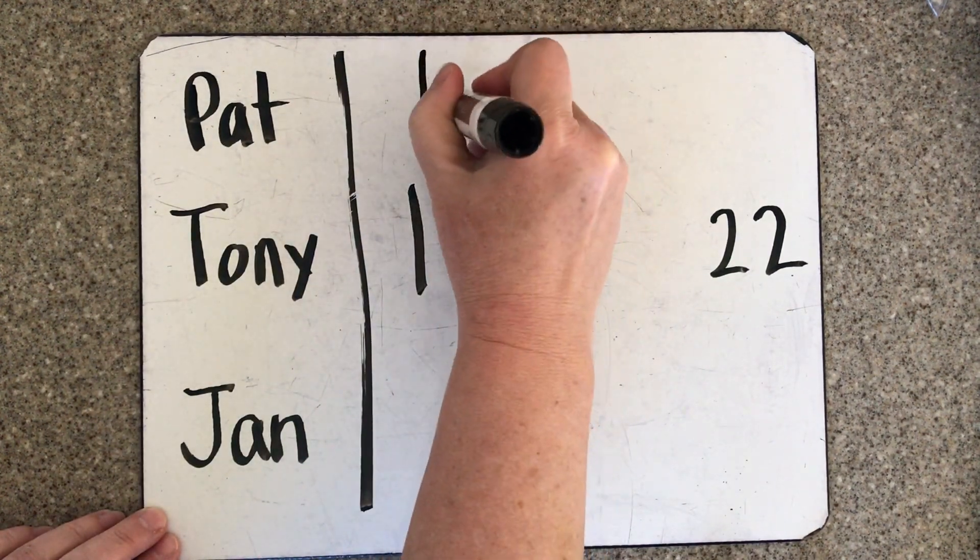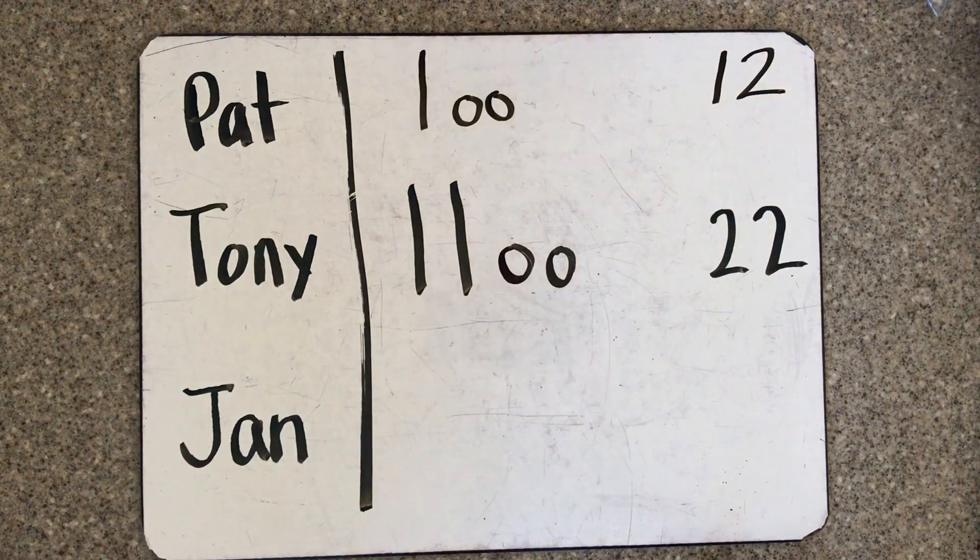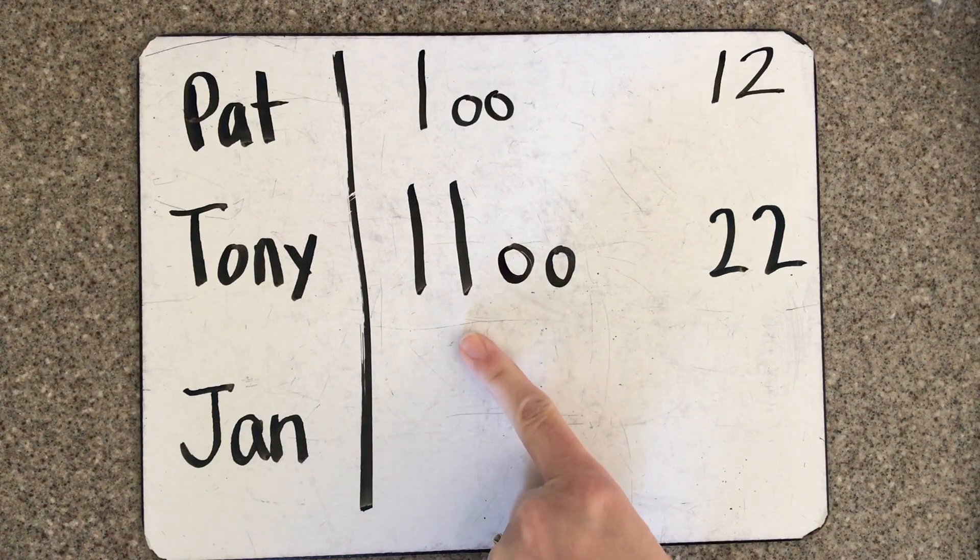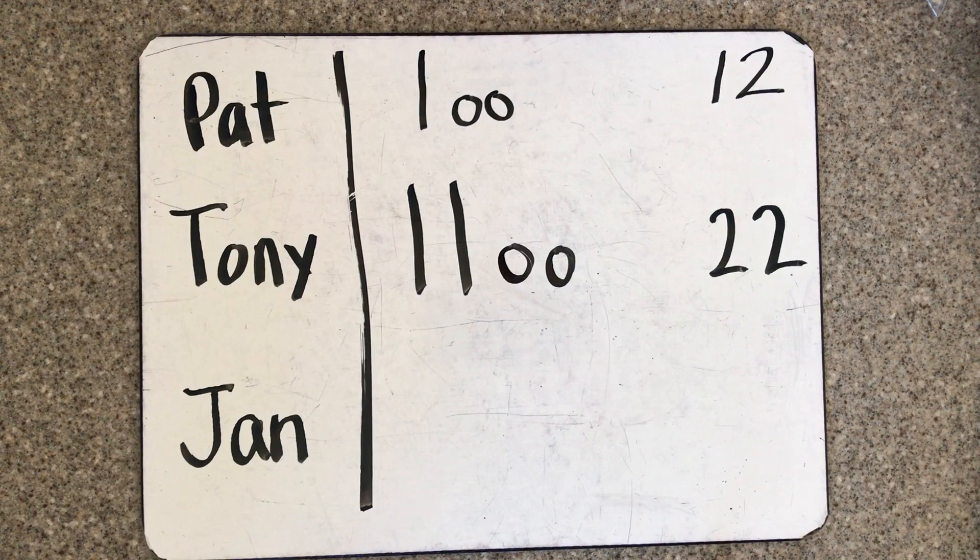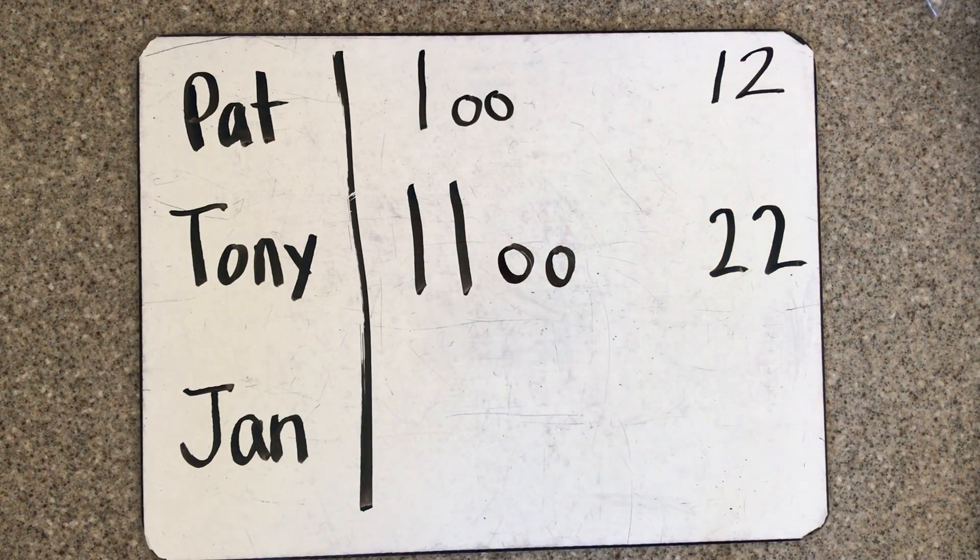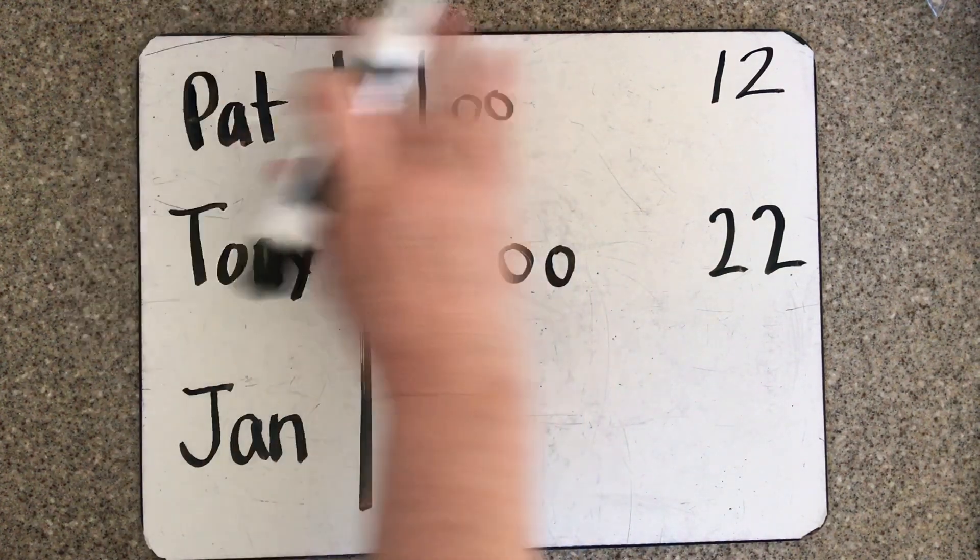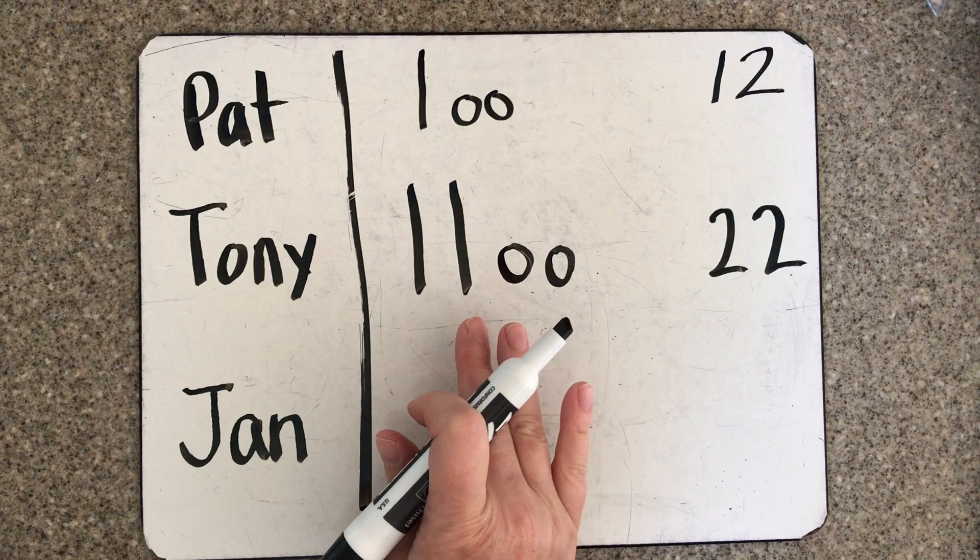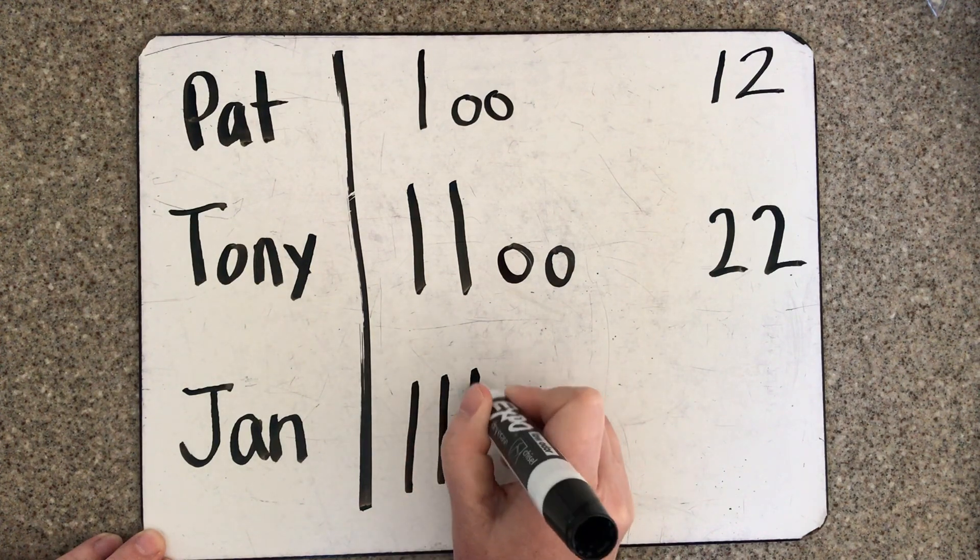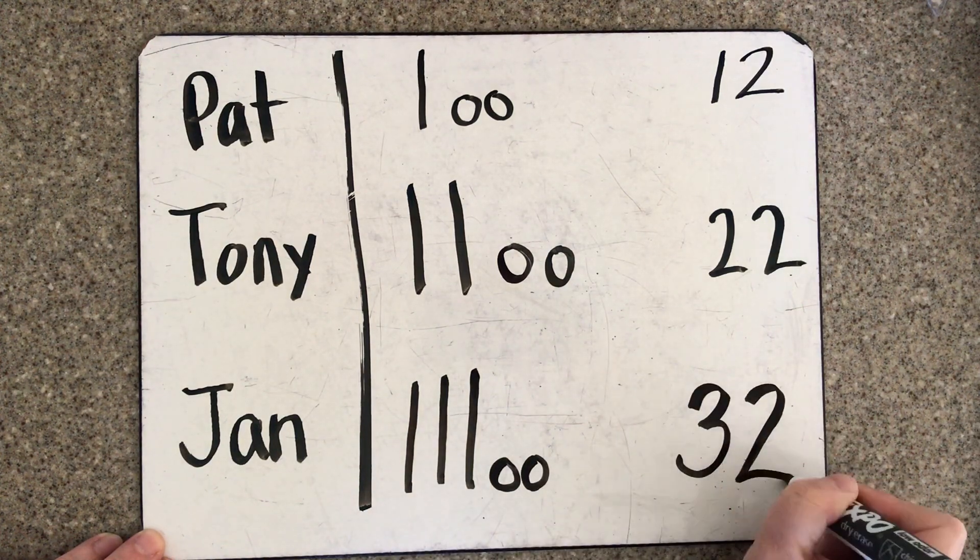Pat has ten less than Tony. Now we're comparing Jan and Tony. Jan has ten more than Tony, so we're not going to start with twelve, we're going to go back to that 22 that Tony had. So how could we show that Jan has ten more than Tony? I'm thinking of what Tony has. Tony had two tens and you said Jan had ten more, so I need to add another ten stick: ten, twenty, thirty. And our ones are the same: thirty-one, thirty-two.